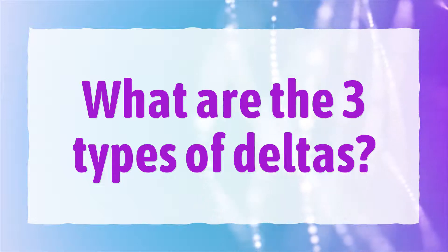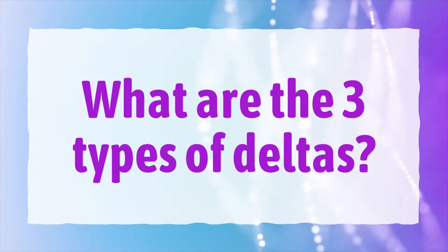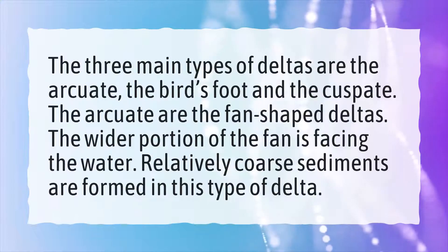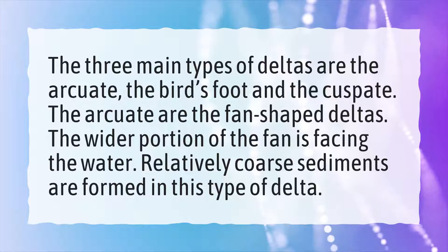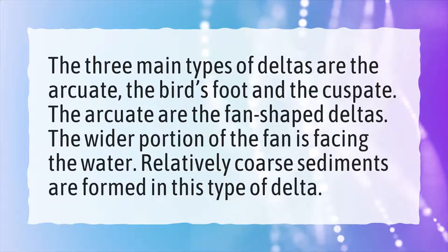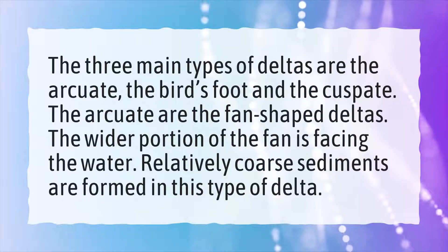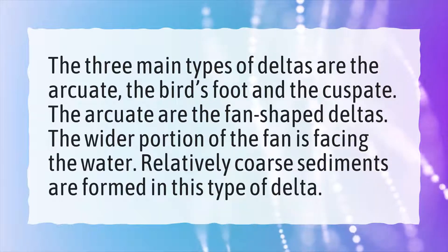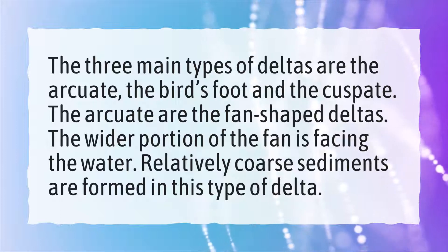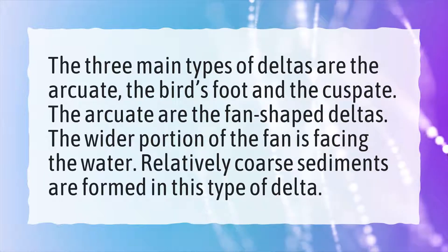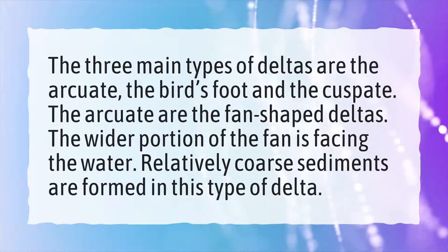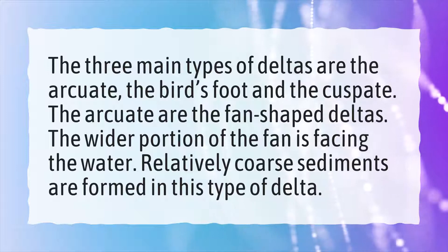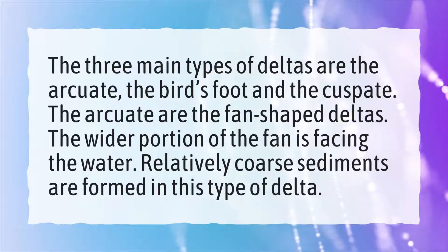What are the three types of deltas? The three main types of deltas are the arcuate, the bird's foot, and the cuspate. The arcuate are the fan-shaped deltas. The wider portion of the fan is facing the water. Relatively coarse sediments are formed in this type of delta.